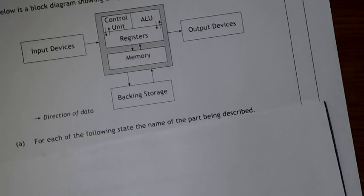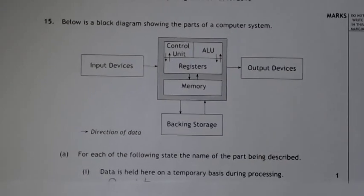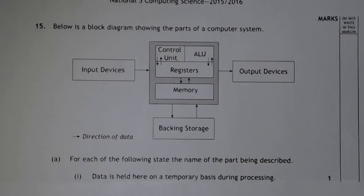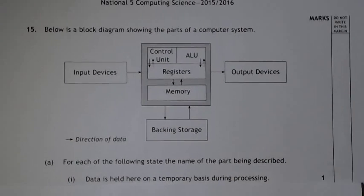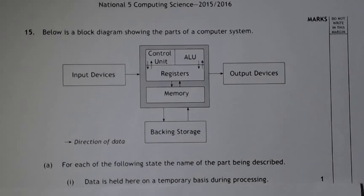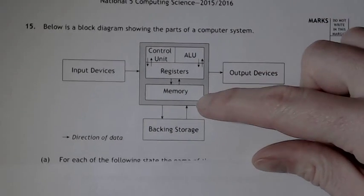Last but not least, it's question 15, quite a small one, just one page. So what you've got is the architecture of a computer: input devices, output, backing storage, and this is your processing unit with your memory as well.